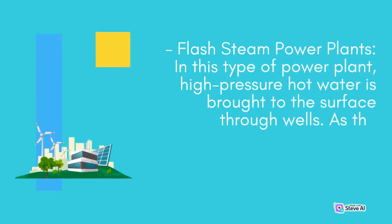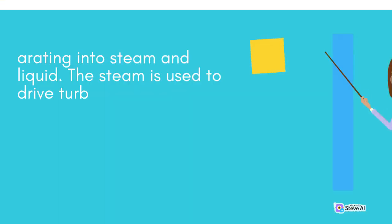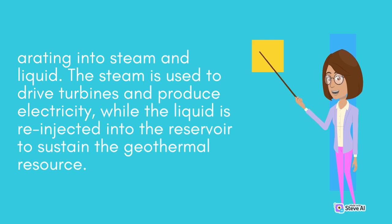In flash steam power plants, high-pressure hot water is brought to the surface through wells. As the pressurized water flows through the system, it rapidly evaporates, separating into steam and liquid. The steam is used to drive turbines and produce electricity, while the liquid is re-injected into the reservoir to sustain the geothermal resource.